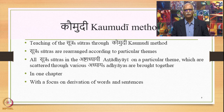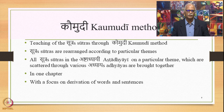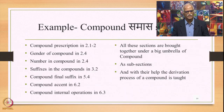In the Kaumudi method, the Sutras are rearranged according to particular themes. All Sutras in the Ashtadhyayi on a particular theme, which are scattered through various Adhyayas, are brought together in this method in one particular chapter named after that theme, with a focus on derivation of words and sentences, and intricate points of derivation are discussed threadbare.